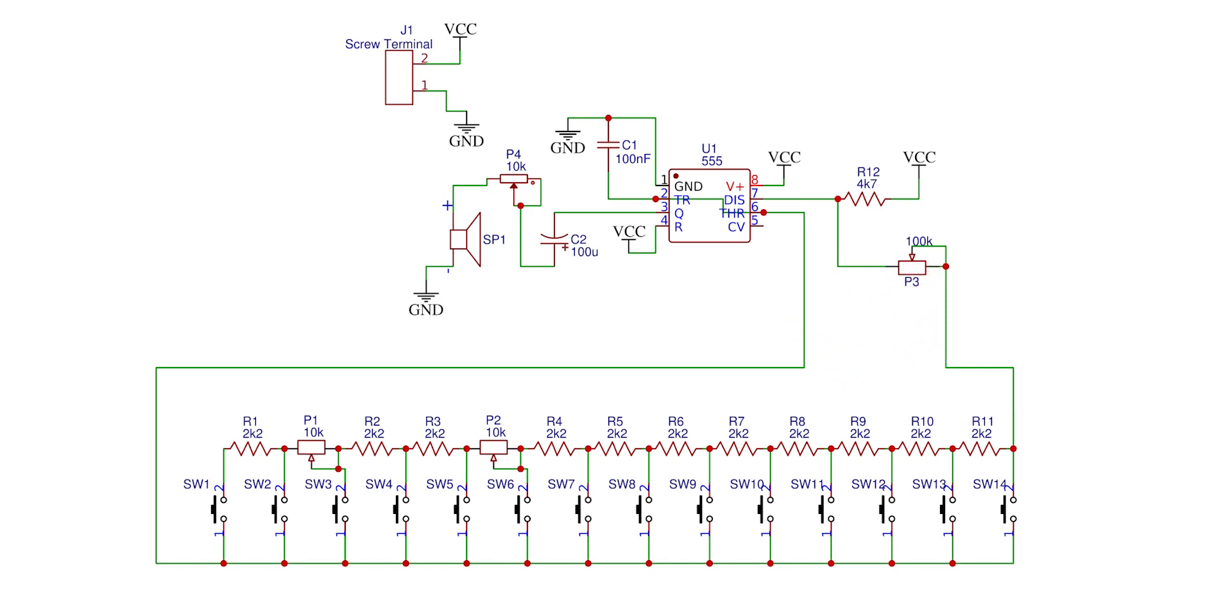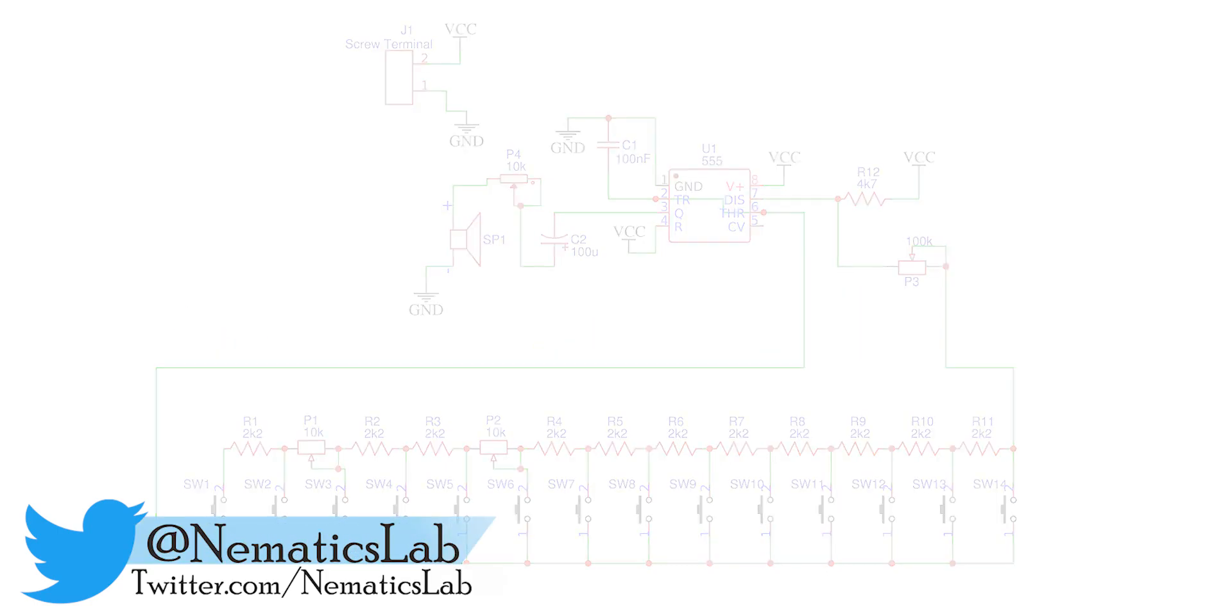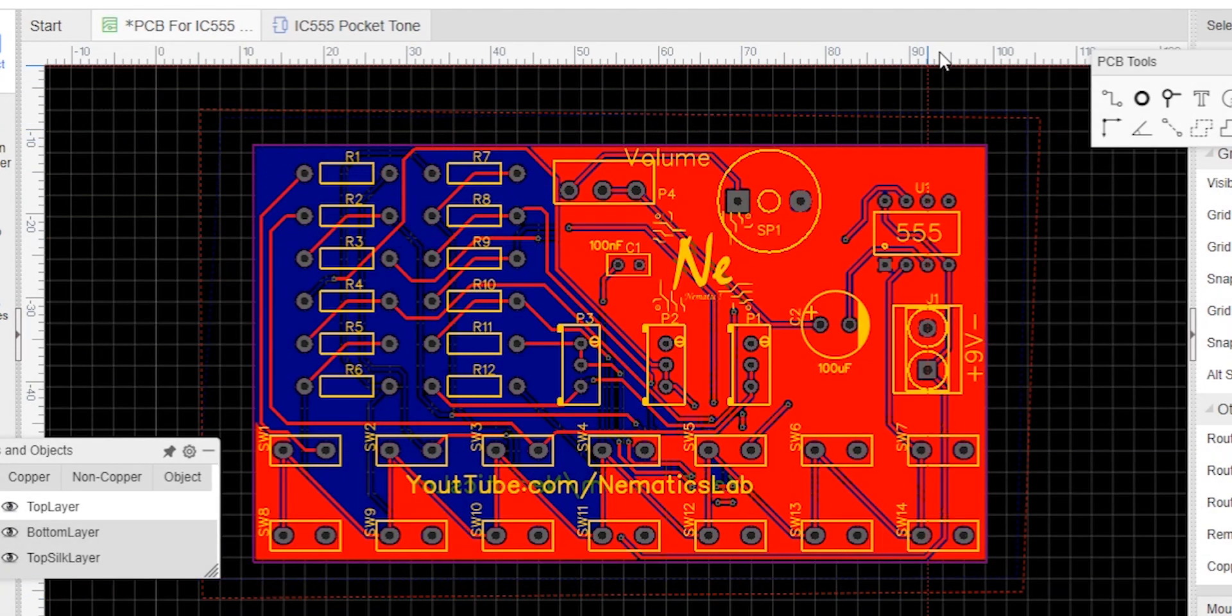Moreover, if you wish to change the frequency, you can use the potentiometer P1, P2, and P3. Since I already had the schematic ready, I converted it into a PCB and ordered mine from JLCPCB.com who are also the sponsor of this video.